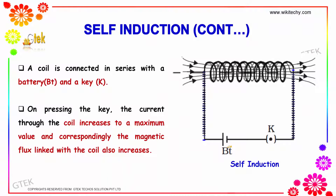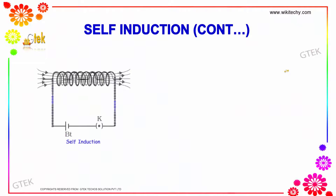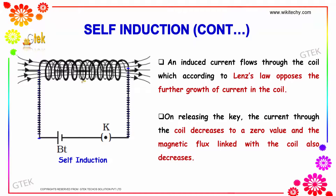A coil is connected to a battery and a key K. On pressing the key, the current through the coil increases to a maximum value, and correspondingly the magnetic flux linked with the coil also increases. An induced current flows through the coil which, according to Lenz's law, opposes the further growth of the current in the coil.